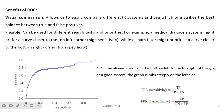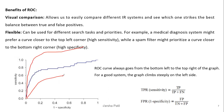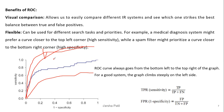Visual comparison using the ROC curve allows us to easily compare different IR systems to see which achieve the best balance between true and false positives. If two applications are compared where the focus is on high sensitivity, the application that covers the maximum area under the curve has a higher success rate. The ROC curve can be used for different search tasks and priorities. For example, a medical diagnosis system might prefer a curve closer to the top-left corner, while a spam filter might prioritize a curve closer to the bottom-right corner — it depends on the application's nature.